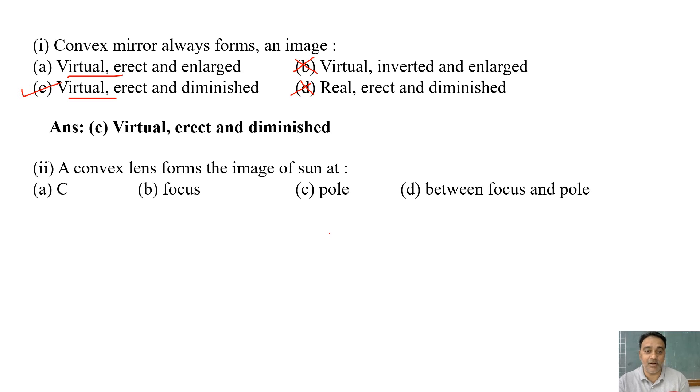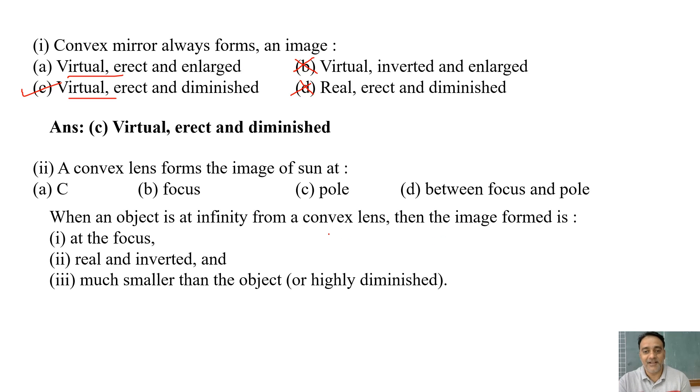Now the second question. A convex lens forms the image of sun at: sea, focus, pole, between focus and pole. So we know that when an object is at infinity from a convex lens, then the image formed is at the focus, real and inverted and much smaller than the object or highly diminished. So we are getting the image at focus. So correct option is b.